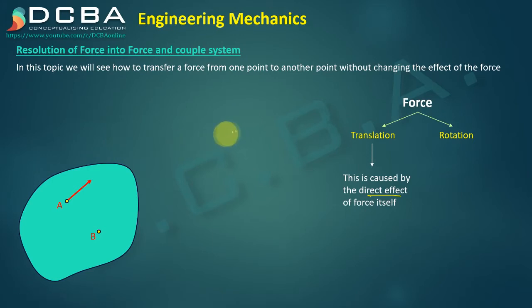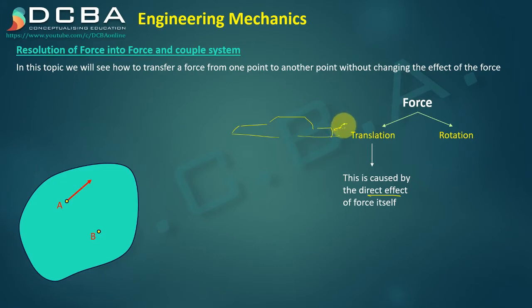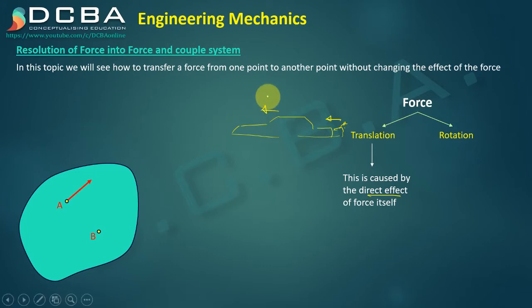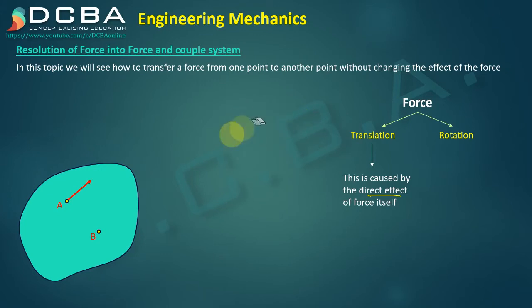For example, let's say you have a car that you are trying to push. You are standing here and applying force in this direction. What you expect is that the car will move in that direction. That is the direct translational effect of the force.